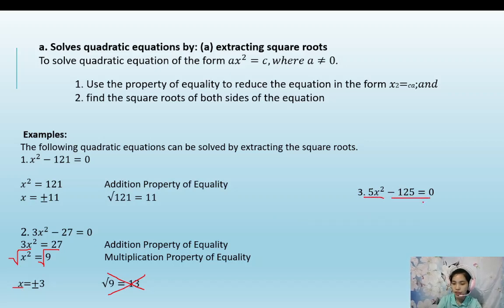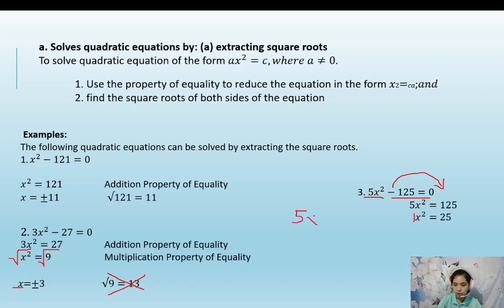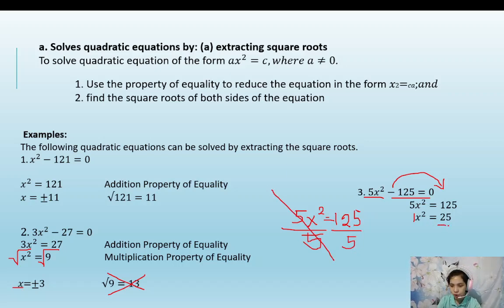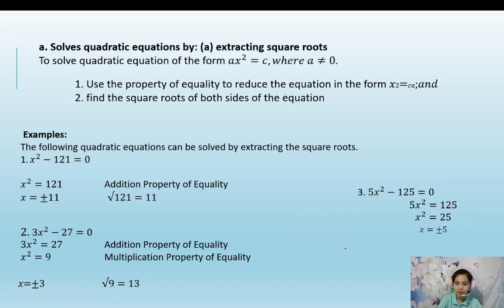Another example: 5x squared minus 125 equals 0. Transposing, it becomes 5x squared equals 125. Divide both sides by 5: x squared equals 25. By extracting the square roots of both sides of the equation, we get x equals positive or negative 5.